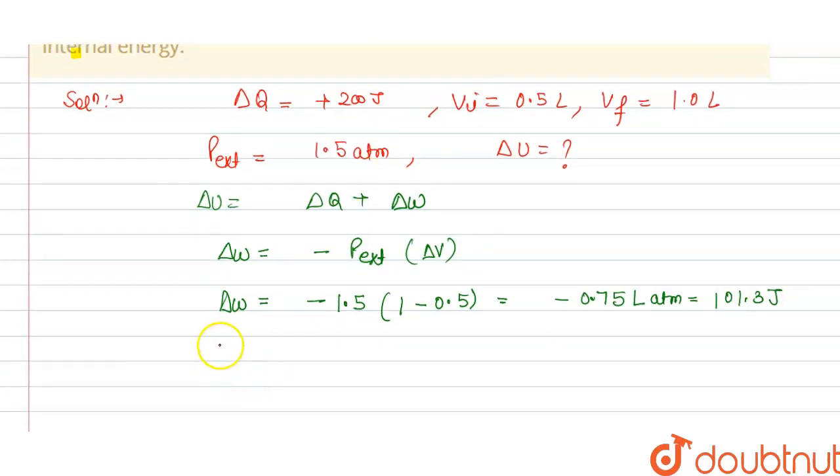As we know that 1 liter atm is equal to this value, we have to convert this into the joule. So we have to multiply this by 101.3.